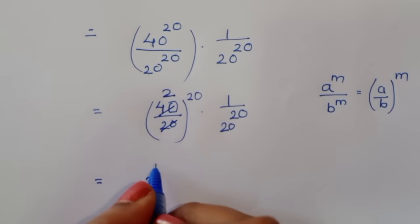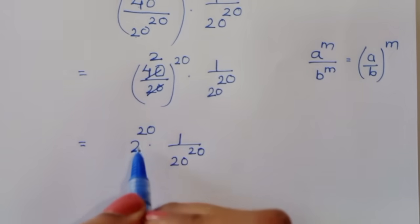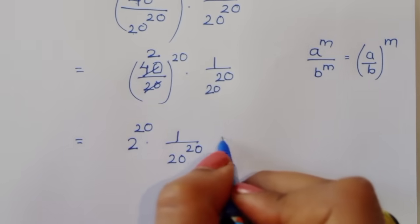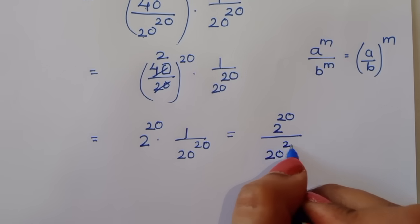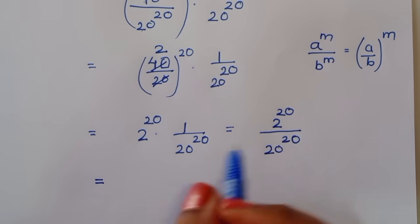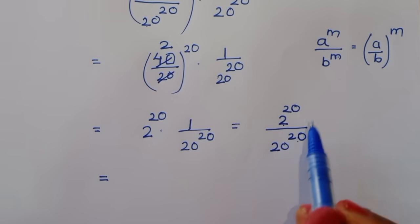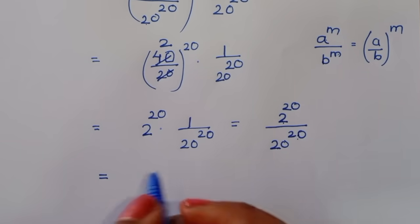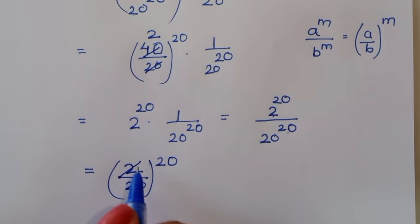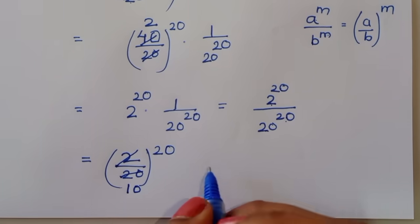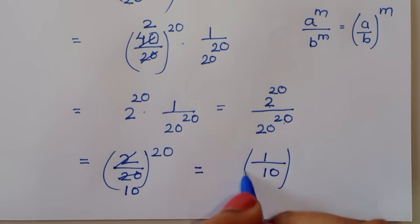This equals 2 power 20 times 1 upon 20 power 20 times 1 upon 20 power 20. Simplifying, we have 2 power 20 in the numerator and 20 power 20 in the denominator. Applying the same formula again — a power m divided by b power m — we get (2/20) to the power 20. Since 2/20 simplifies to 1/10, we get (1/10) to the power 20.